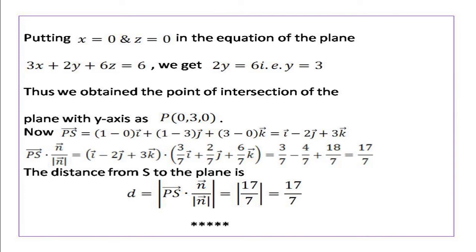The unit vector n/|n| = (3/7)i + (2/7)j + (6/7)k. A point on the plane is easiest found where it intersects the coordinate axes. Putting x = 0 and z = 0 in the plane's equation gives 2y = 6, that is y = 3. Thus the point of intersection of the plane with the y-axis is P(0, 3, 0).